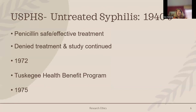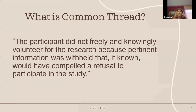In exchange for allowing blood draws and disease monitoring, participants were offered free medical exams, free meals, and free burial insurance since the study endpoint was their death. In the 1940s, penicillin became a safe and effective treatment for syphilis — that's when the study became unethical, because none of the men were allowed to receive penicillin. The researchers feared that treating the men would end their study.